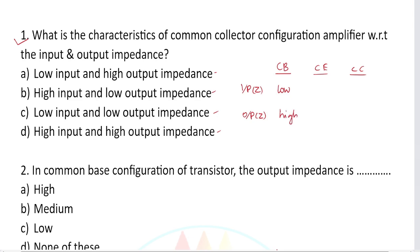For common emitter configuration: input impedance is moderate, output impedance is high. For common collector configuration: input impedance is high, output impedance is low.